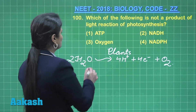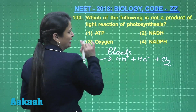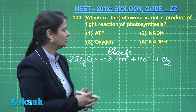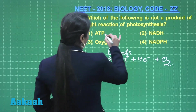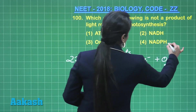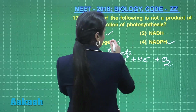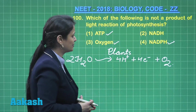Oxygen is one of the products produced in the light reaction. Not only that, there is also production of ATP and NADPH. So these three things — oxygen, ATP, and NADPH — are formed in the light reaction.